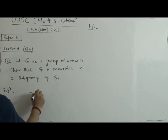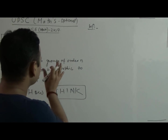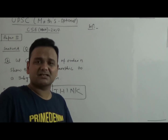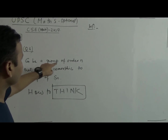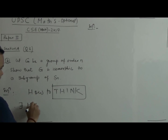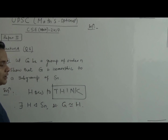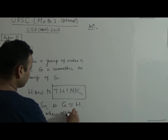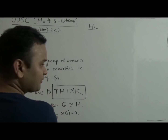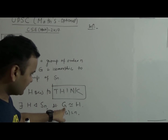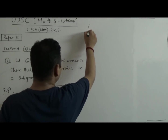Let's understand what your approach should be for this kind of problem. What do we have to do? We have to find a subgroup H of S_N such that G is isomorphic to H, where the order of G is equal to N. That's what they are asking. First understand what we have to do in the exam — find a subgroup of S_N such that G is isomorphic to it. G is a group of order N.